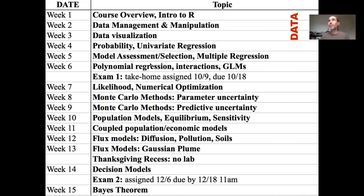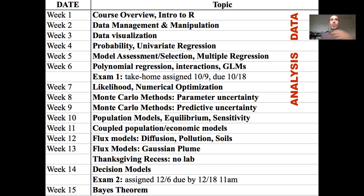We're going to move on from just looking at data by itself to data analysis. This is going to start with some basic concepts on probability and univariate regression, picking up where previous courses in statistics will have finished off. I suspect a lot of you are coming into this having taken 270. We'll learn about model assessment — how well different models are performing — and model selection, choosing between different alternative models. Then we'll move from simple univariate regression to multiple regression with multiple covariates, nonlinear and polynomial regression, interaction terms, and generalized linear models.